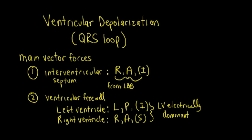After watching this video, you should be able to apply your understanding of the main vector forces of ventricular depolarization spreading from the subendocardium to the subepicardium and predict what the QRS complexes will look like in any given lead. Specifically, we focus on leads V1, V2, 1, AVL, V5, and V6 as our key leads when we analyze an ECG.